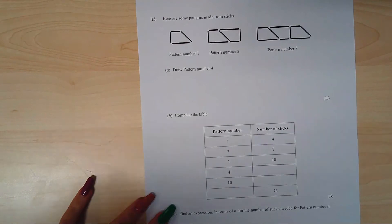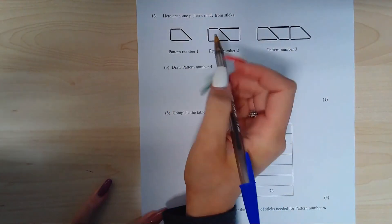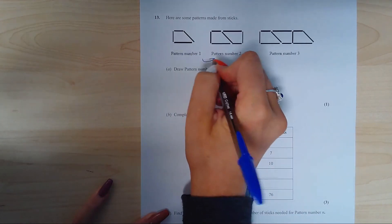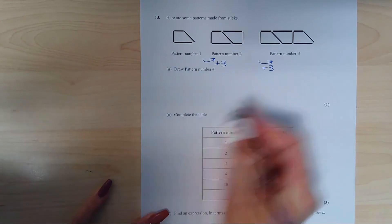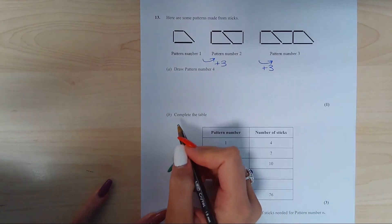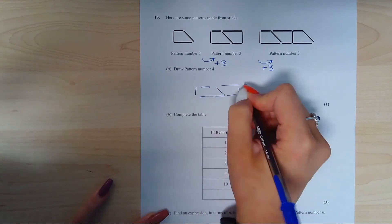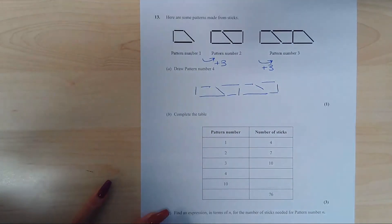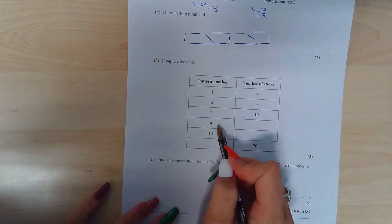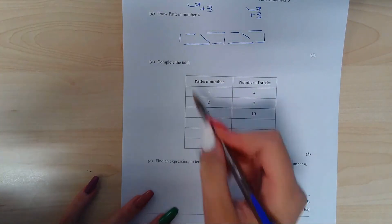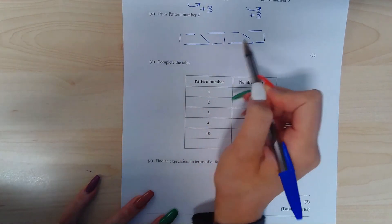Okay, moving on to question 13 then. Here are some patterns of matchsticks. And then you need to look how many they have increased by each time. So there is an additional three matchsticks each time. So drawing the pattern, you're going to take this pattern, adding on three each time. So yours will look like so, adding on those extra three. In order to complete the table then, well we can count how many matchsticks there are for pattern number four. So there is 1, 2, 3, 4, 5, 6, 7, 8, 9, 10, 11, 12, 13.